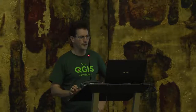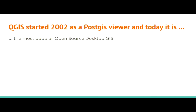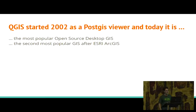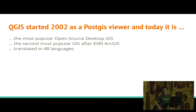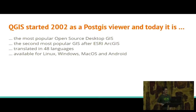QGIS started in 2002 as a PostGIS viewer, and today it is the most popular open source desktop GIS. It's also the second most popular GIS after ESRI ArcGIS, and it's translated into 48 languages. A very nice thing that makes QGIS stand out is it's available for Linux, Windows, Mac, and even Android in another version called QField.